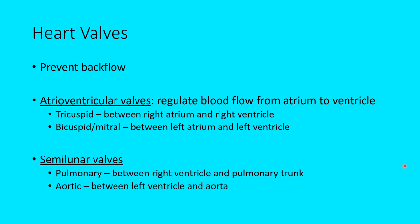The heart valves prevent backflow. The AV valves regulate flow from the atrium to the ventricle — tricuspid on the right side, bicuspid or mitral on the left side. The semilunar valves prevent blood from flowing back from the arteries into the ventricles: the pulmonary semilunar valve is between the right ventricle and pulmonary trunk, and the aortic semilunar valve is between the left ventricle and the aorta.